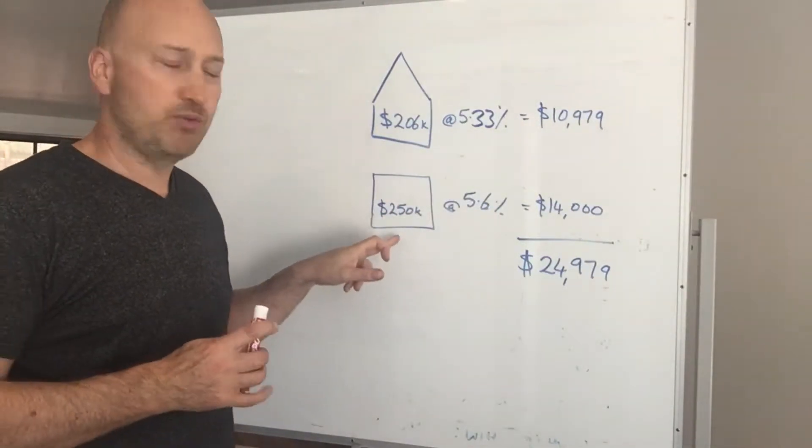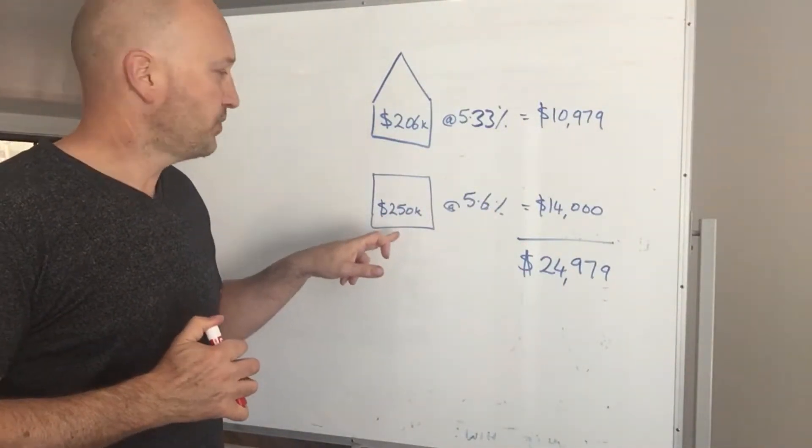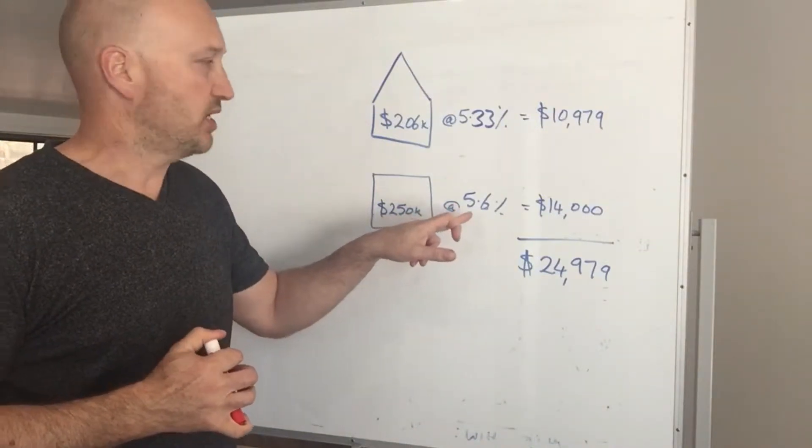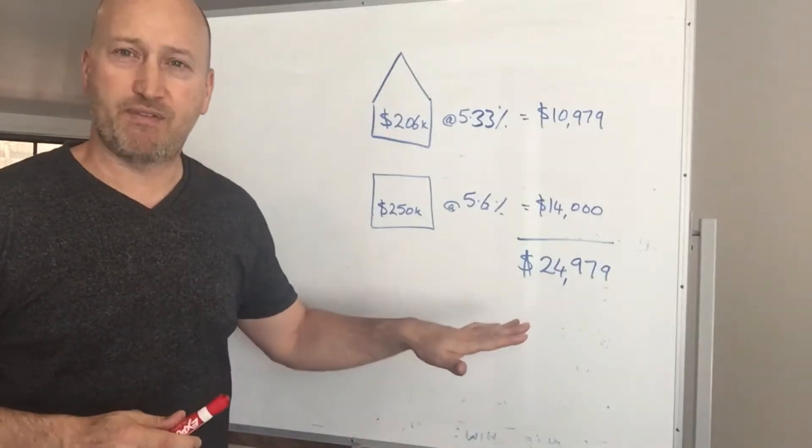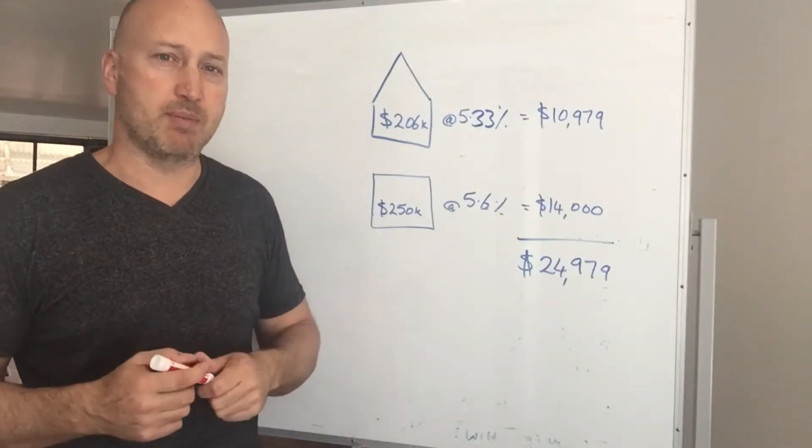They also had an investment loan of $250,000 at 5.6%, so that was a total of $14,000 worth of interest, or about $25,000 worth of interest repayments.